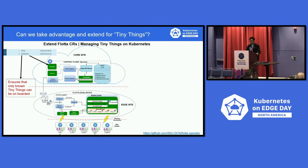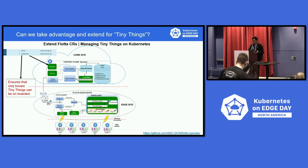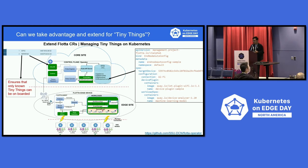The end-node auto-config CRD is extended from the Procta custom resource. Tiny things connect to the edge side by wireless technologies, for example Wi-Fi and BLE, through a device plugin module that supports synchronizing multiple types of connection protocols into a standard structure for device registration and configuration on the core side. The device registration and configuration process is automated by running just the end-node auto-config custom resource we have developed.